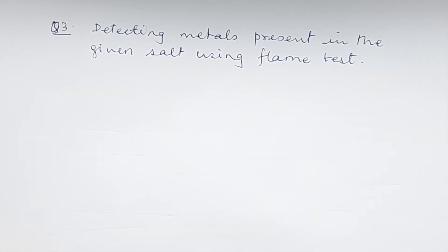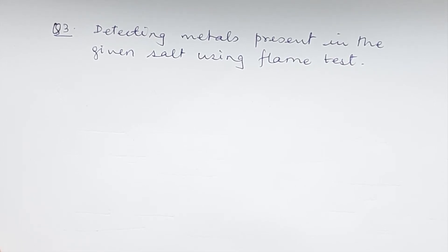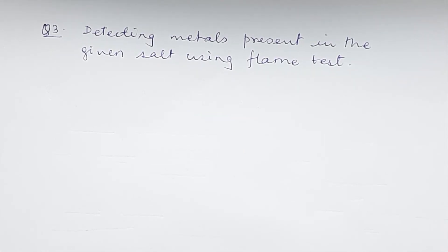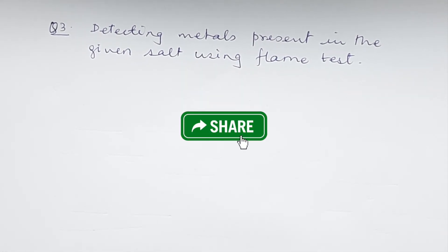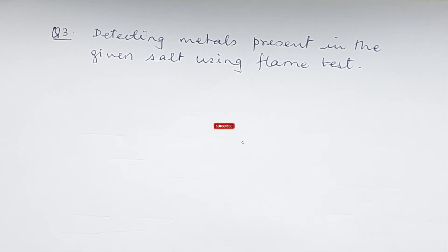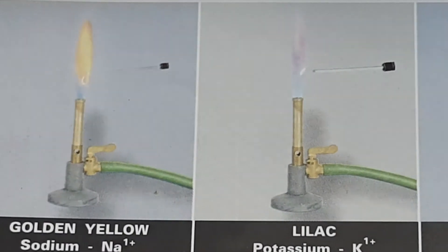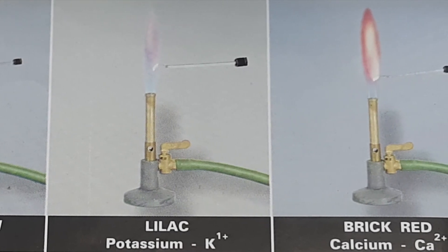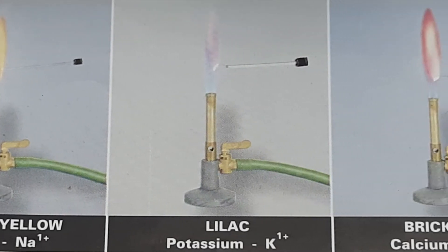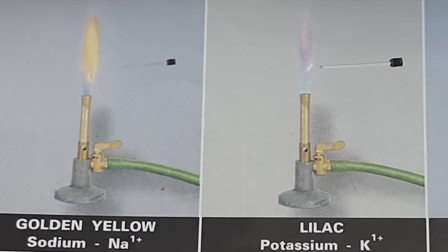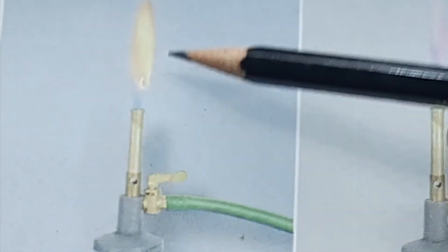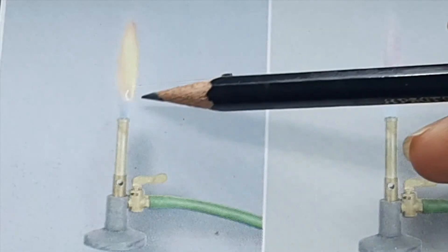The third type of question is detecting metals present in a given salt using the flame test. There are three metals identifiable at this level. For the flame test: take a platinum wire, clean it by dipping it in concentrated hydrochloric acid, then dip it in the salt. Hold the platinum wire in the outermost (non-luminous) region of the flame and observe the color.